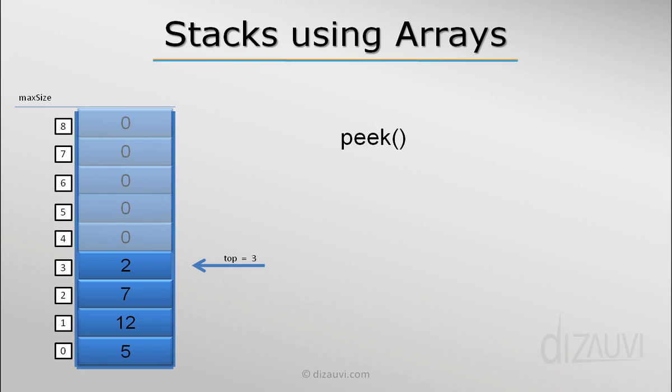Let's see the peek operation. All peek does here is return the element pointed by the top index, which in this case is 2, and the value of top is not changed in case of the peek operation.